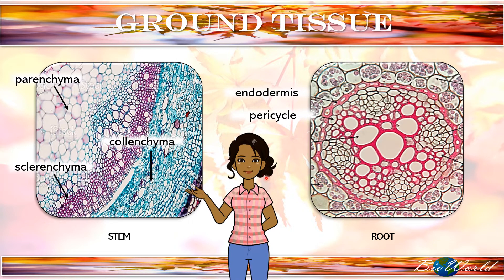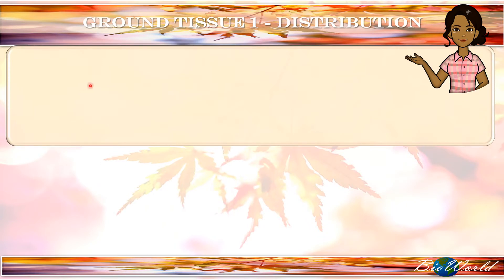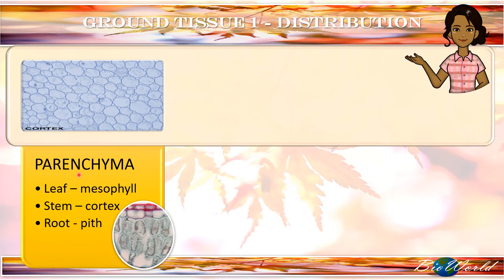To start off our discussion, I'll focus first on the parenchyma, collenchyma and sclerenchyma cells. Parenchyma cells are distributed in the leaf, stem and root. In the cortex of the stem and the pith of the root, parenchyma cells appear like in this microscope image. However, the parenchyma cells in the leaf appear as mesophyll cells.